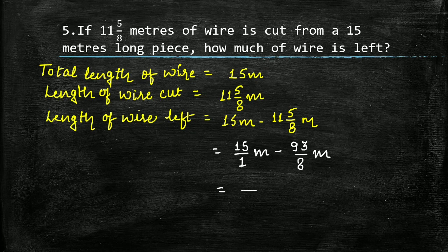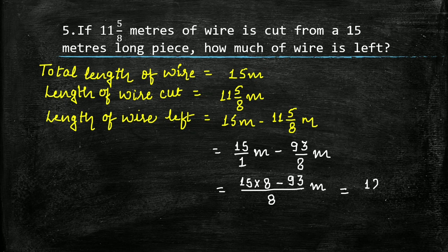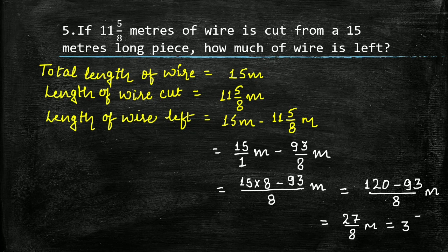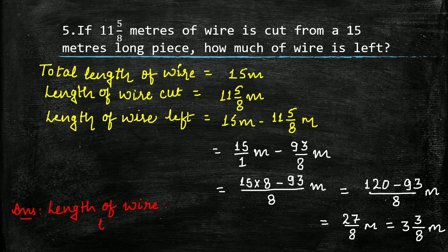LCM of 1 and 8 is 8. This fraction we have to multiply by 8, so 15 multiplied by 8, minus — here the denominator is already 8, so write its numerator as it is, that is 93. 15 into 8 is 120 minus 93 upon 8 meters, so this will equal 27 upon 8 meters. Convert it to a mixed fraction and we will get 3 whole 3 by 8 meters. The answer is: length of wire left is equal to 3 whole 3 by 8 meters.